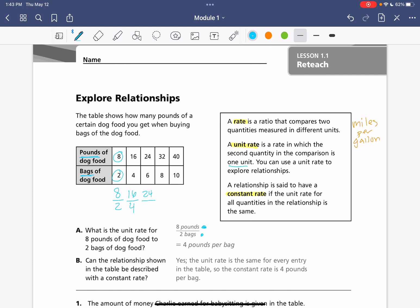24 to 6, 32 to 8, and 40 to 10. And what do we notice about all these if we simplify them? Pause if you need to. Do a little division. All of those end up equaling 4. Every single one.